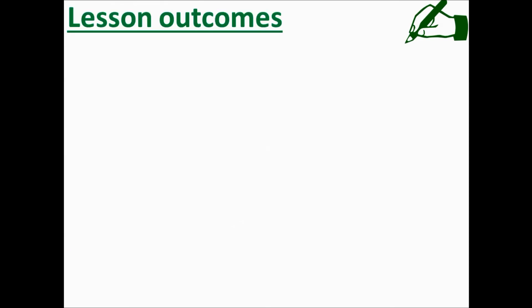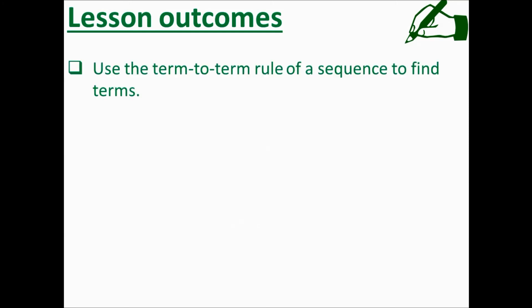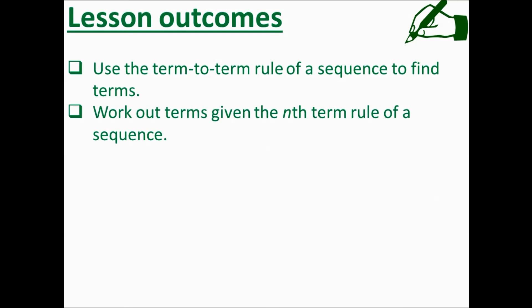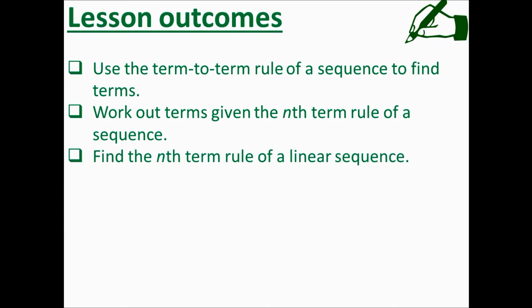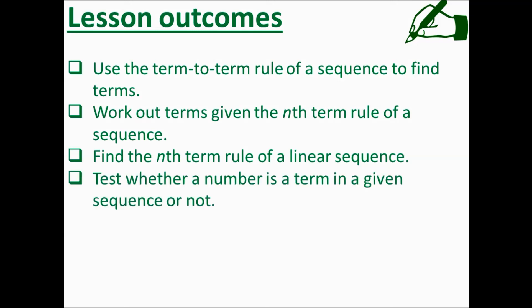Let me summarize the lesson outcomes. We should now be able to use the term-to-term rule of a sequence to find terms, and work out terms given the nth term rule of a sequence. We looked at how to find the nth term rule of a linear sequence using the term-to-term difference, and had a go at testing whether a number is a term in a given sequence. I will be uploading exercises to help you practice what you've learned shortly, so look out for that link.